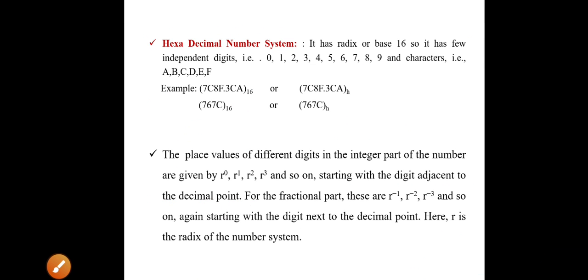As far as the hexadecimal number system is concerned, it has radix or base 16, so it has few independent digits like 0, 1, 2, 3, 4, 5, 6, 7, 8, 9. And after 9, for representing 10, we need to have A. For representing 11, we need to have B. For 12, we should have C. And for 13, we are having D. For 14, we are having E. And for 15, we are having F.